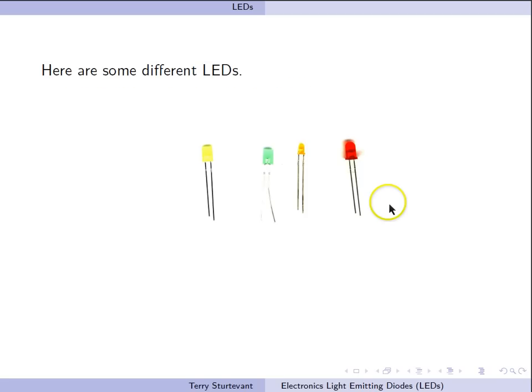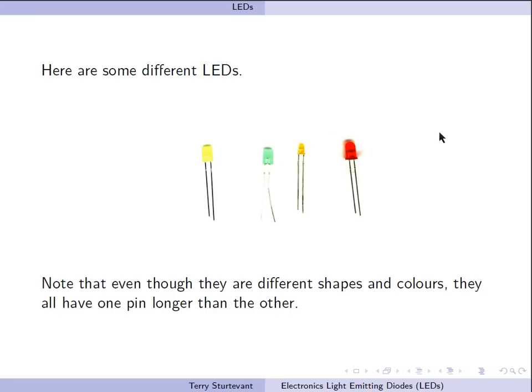Here we'll take a look at some real LEDs. Here we see four LEDs: red, orange, green and yellow. Note that for each of the LEDs we can identify the anode and the cathode. We see the long pin on the right for each LED. So we can find the anode for each of the LEDs.